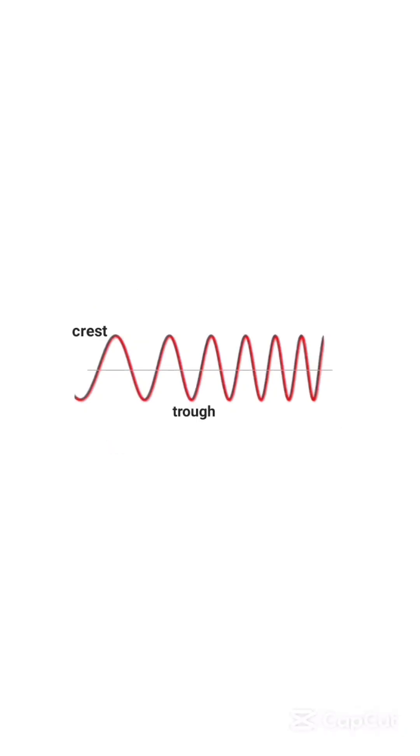The height or the maximum displacement of the wave is called amplitude. It is measured from the central line or the equilibrium position to the crest or the trough.